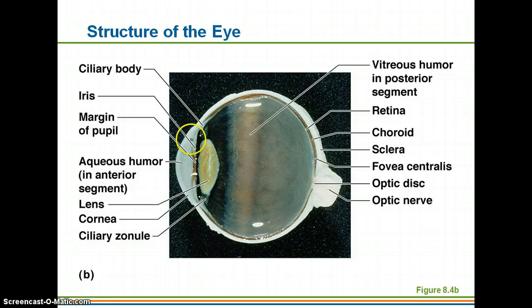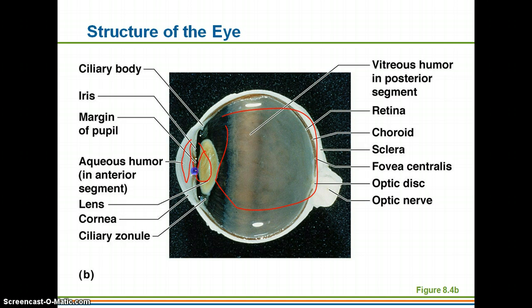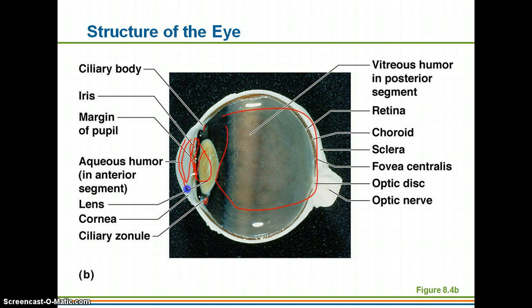We have the anterior segment filled with aqueous humor, which is a thinner fluid, and the posterior segment filled with a jelly-like fluid. We have the lens, and the hole here is the pupil. The ciliary zonule and ciliary body help control the shape of the lens. The iris is the color of your eye, the cornea is out in front, and the optic nerve is extremely large compared to other nerves in the body because you have so many receptors in your eyes.